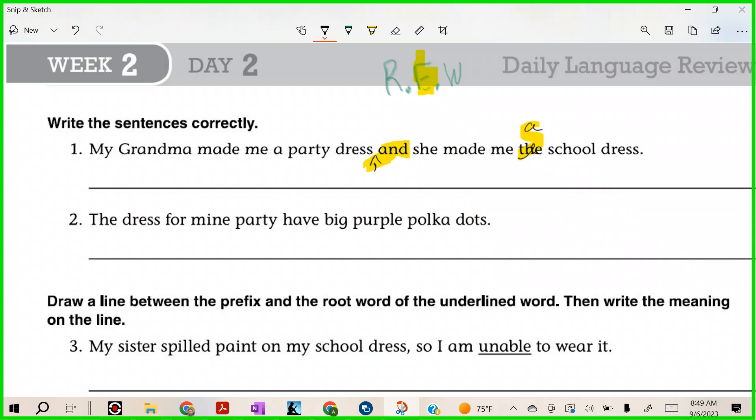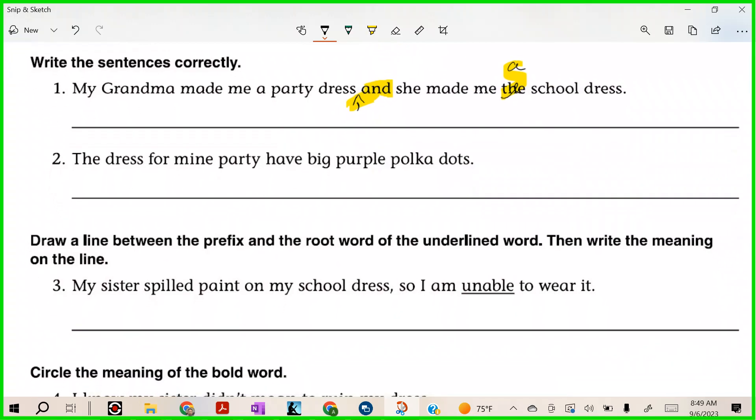Alright, so let's take a look now at the second one. It says 'The dress for mine party have big purple polka dots.' Oh my goodness, 'The dress for mine party have big purple polka dots.' I hear mistakes. Come on, who's on it? Who wants to get after it?